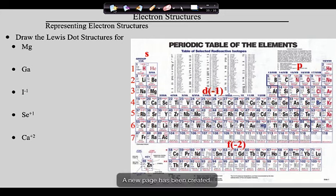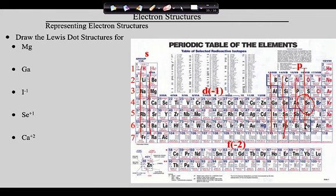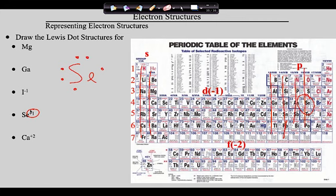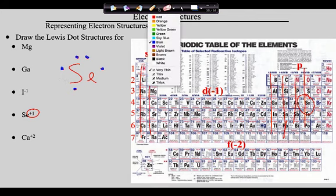Next, selenium. Counting over, selenium is in the sixth group, so it has six dots. One and two pair up, then three, four, and five go unpaired, and electron six is forced to pair up in the P sublevel. Now we give selenium a plus one charge, so we remove an electron — specifically the last one placed, which is electron six. Removing that electron gives selenium a plus one charge.